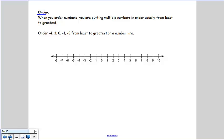It says, when you order numbers, you are putting multiple numbers in order, usually from least to greatest. So if we look at this particular one, we are doing least to greatest. We are going to use our number line, and thankfully it's numbered again for us.